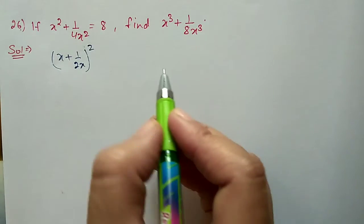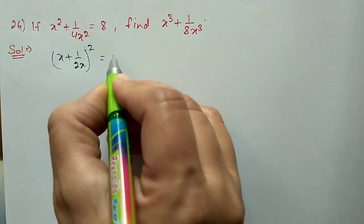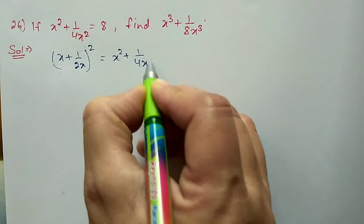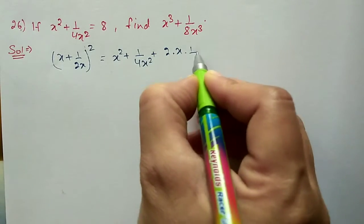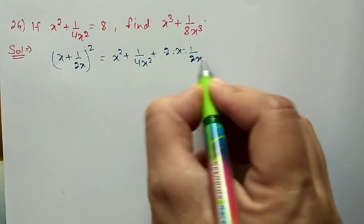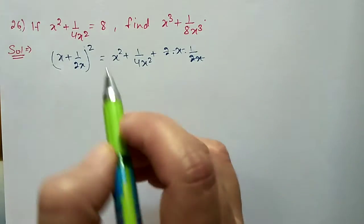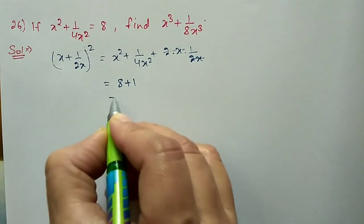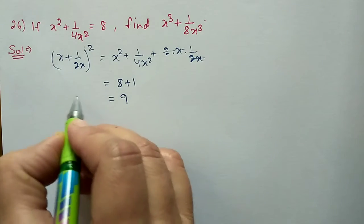So (x + 1/2x)² = x² + 1/4x² + 2 × x × 1/2x. The 2x terms cancel, giving 1, and this value equals 8 as given. So 8 + 1 = 9, and this is (x + 1/2x)².